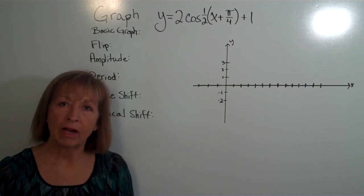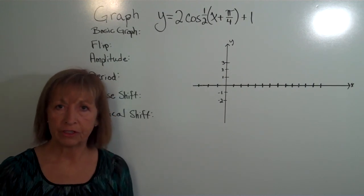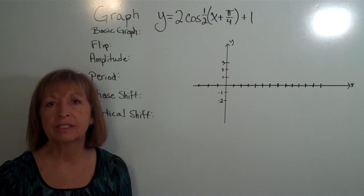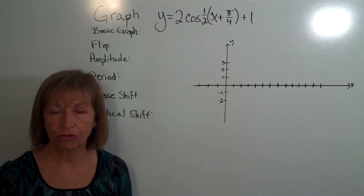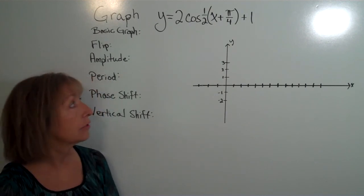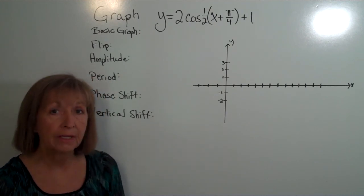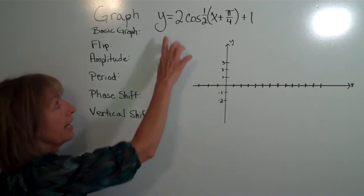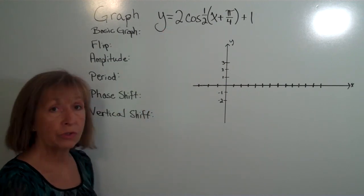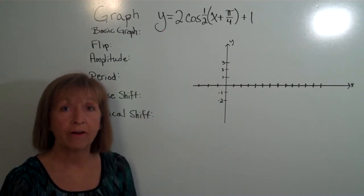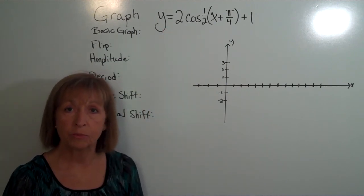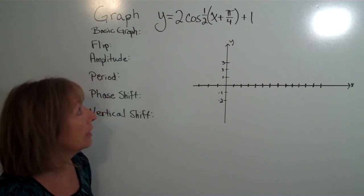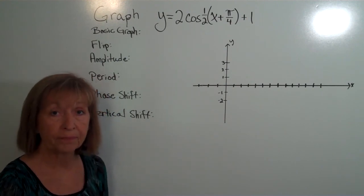Let's look at a graph of a trig function that has some stretches and translations. We're asked to graph y equals 2 cosine of one half of (x + π/4), and then plus 1.